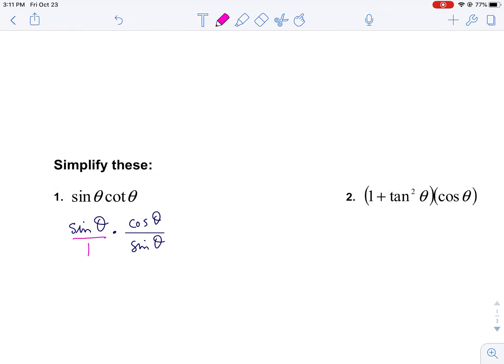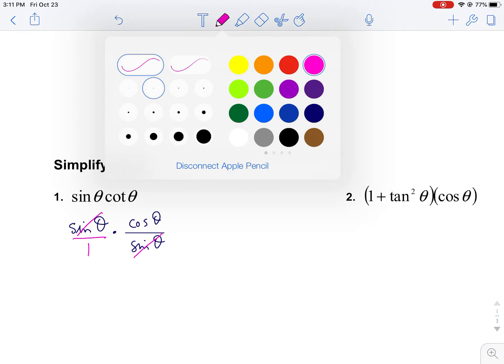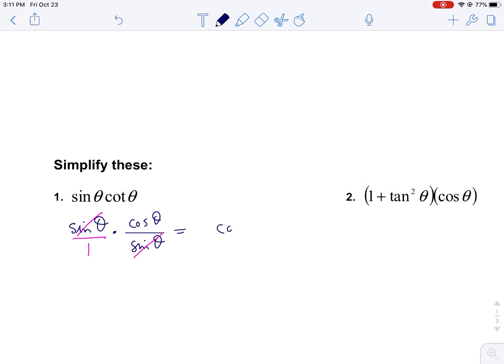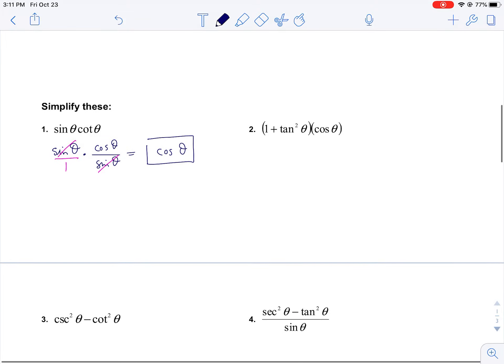So I'll just do a substitution there, and notice what happens. It's a multiplication, so I can just cancel the sine with the sine, and here I'm left with cosine θ. So all we're doing is using some of these properties to simplify these. That just gives you a quick example of how we kind of use these.